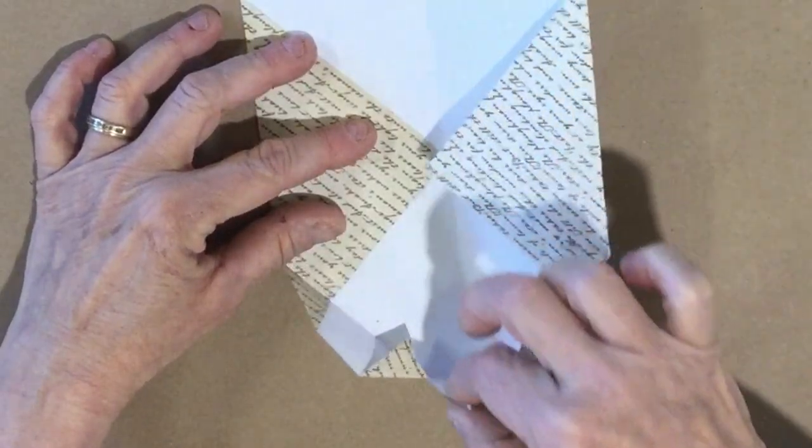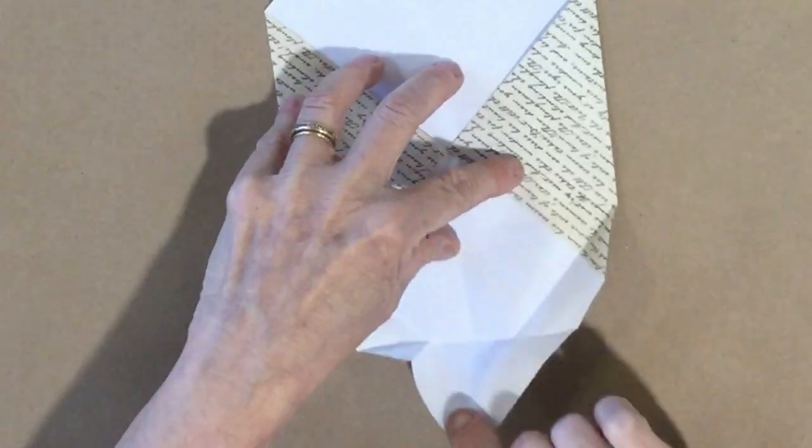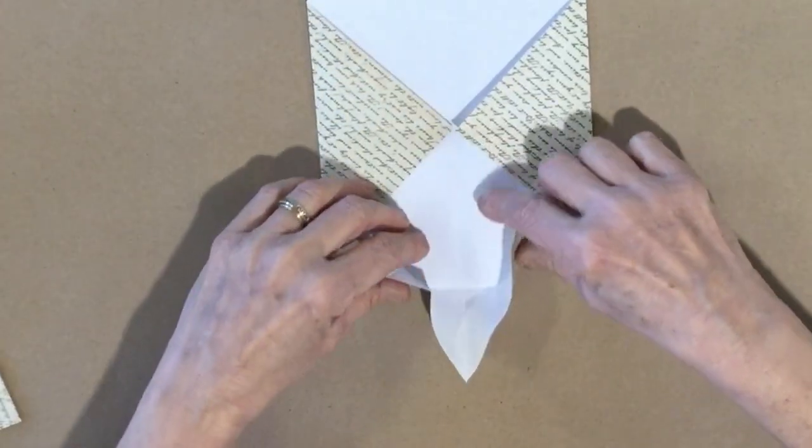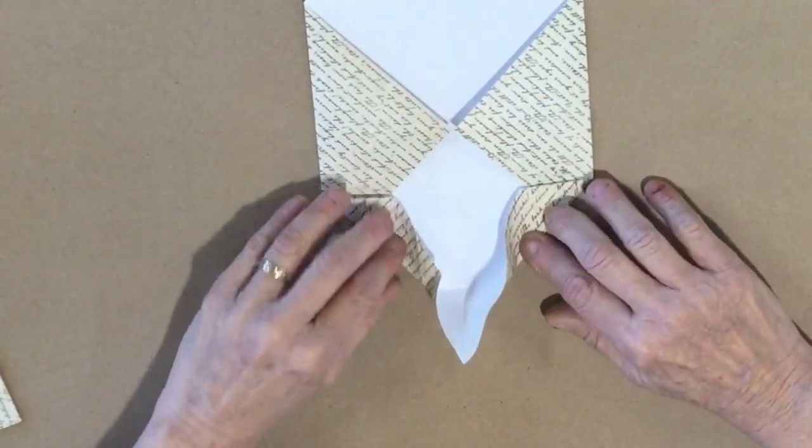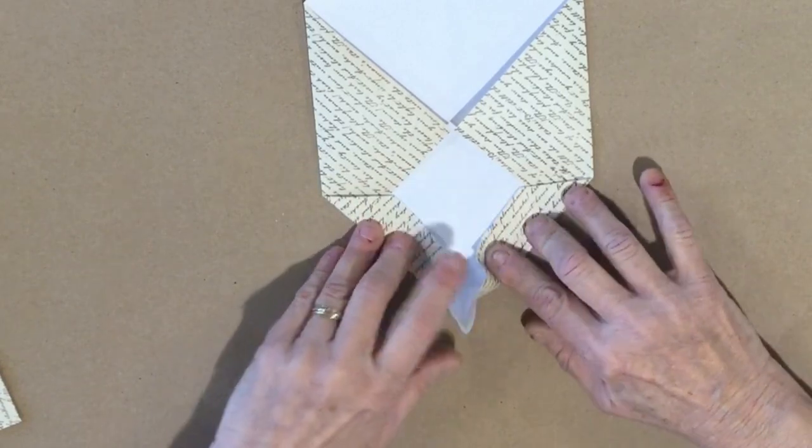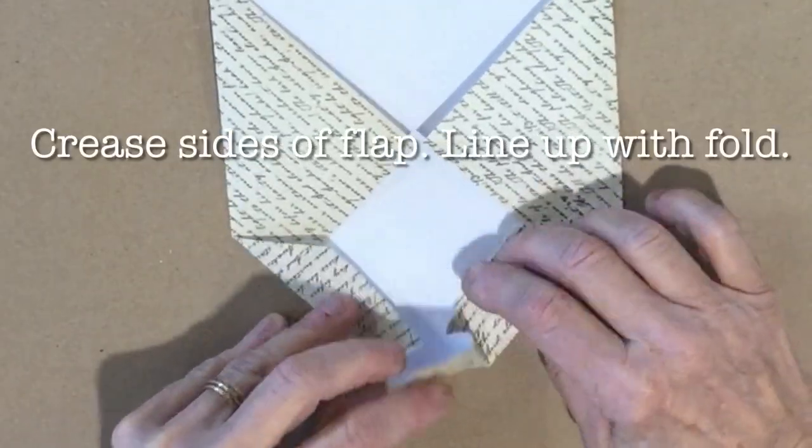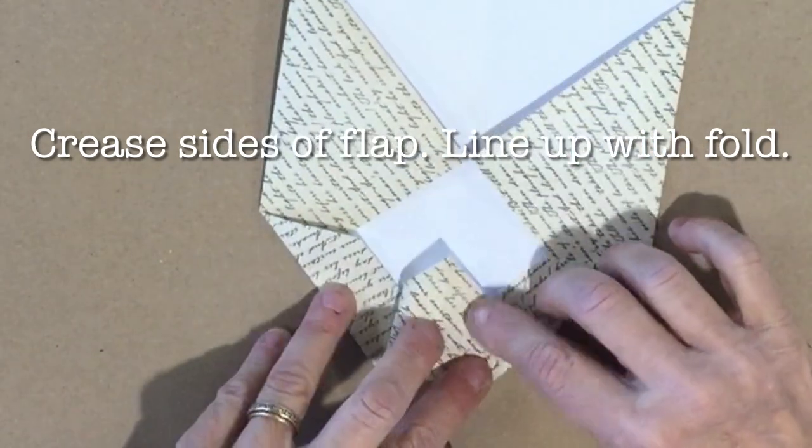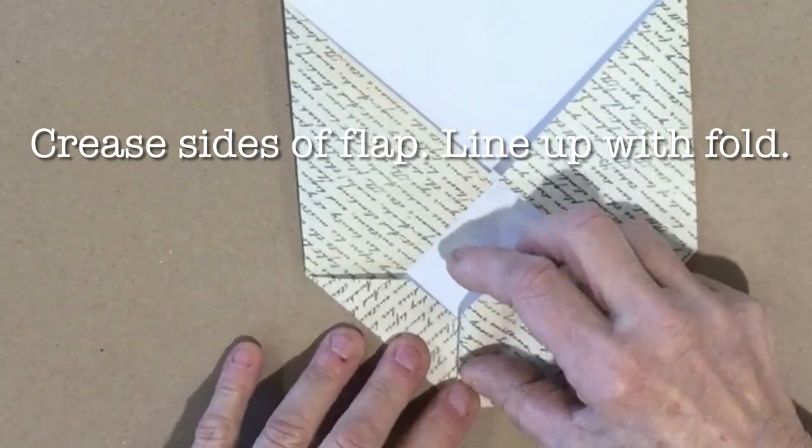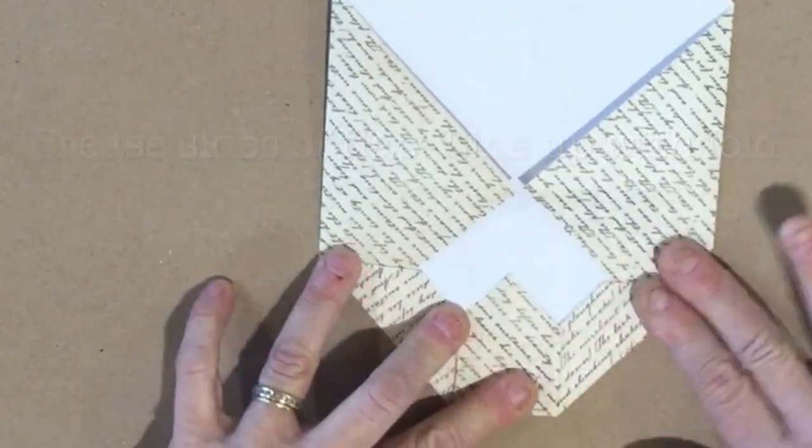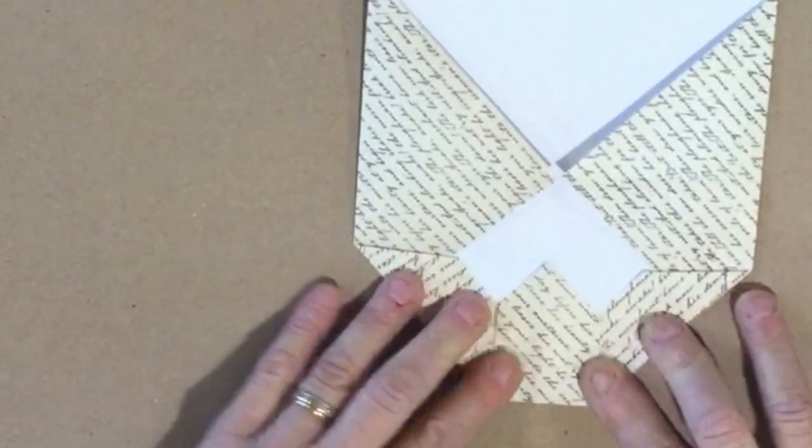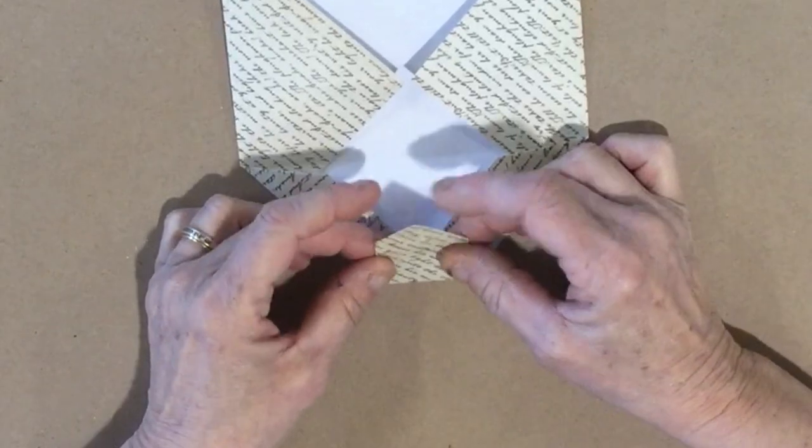You are going to pick this piece up and these little corners, you are going to put your fingers here and here. You want to just crease this flat. I am going to fold this flap down.